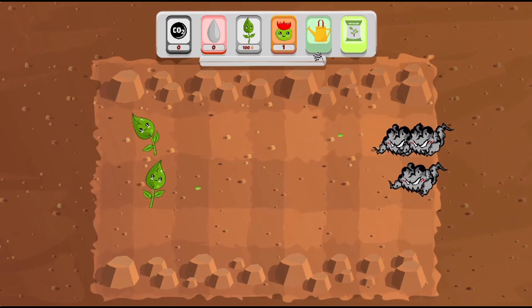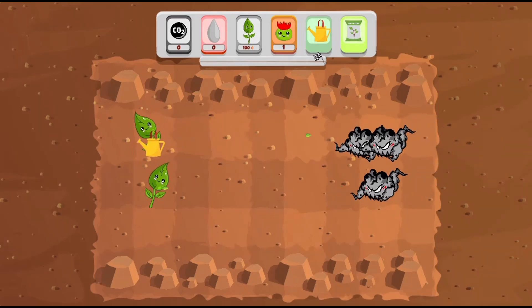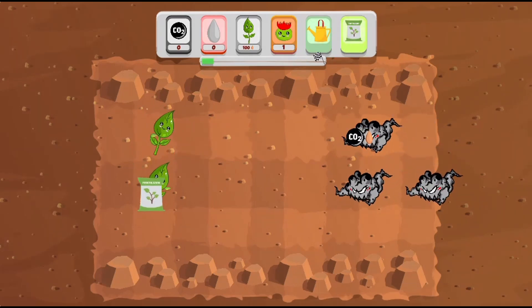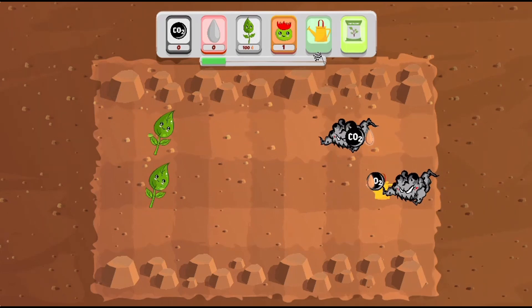Use the mouse to click and place plants on the screen to help destroy the CO2 monsters. Don't let the monsters reach the other side of the map.